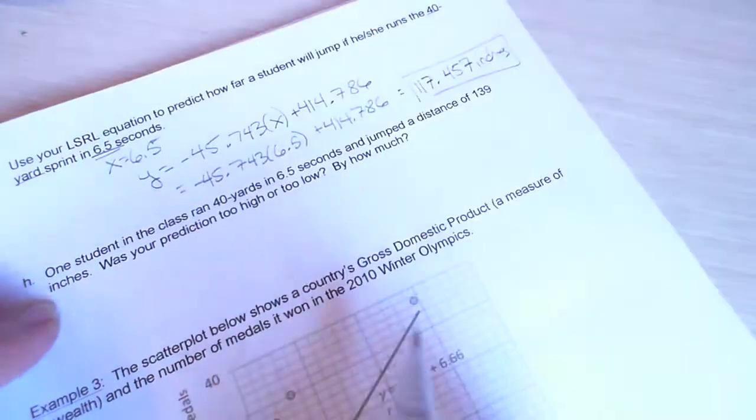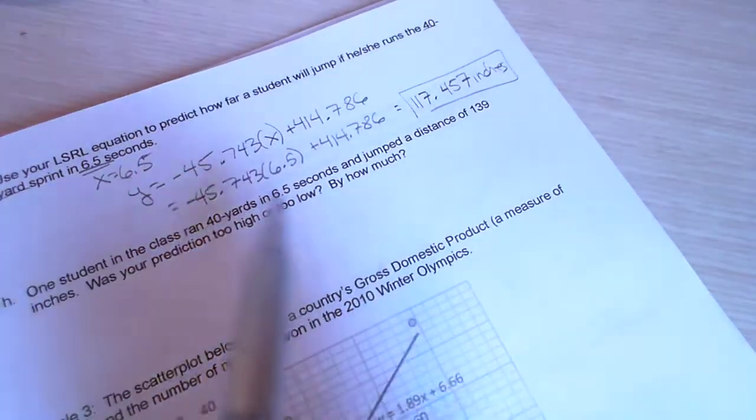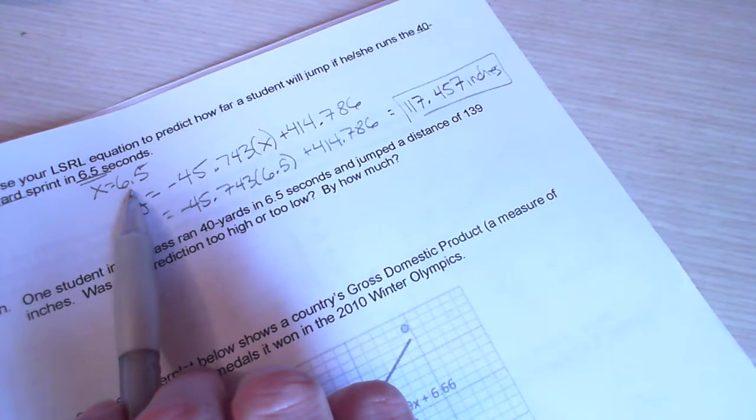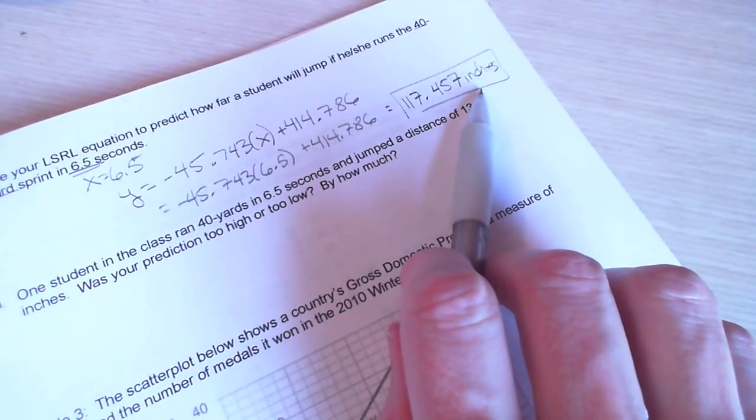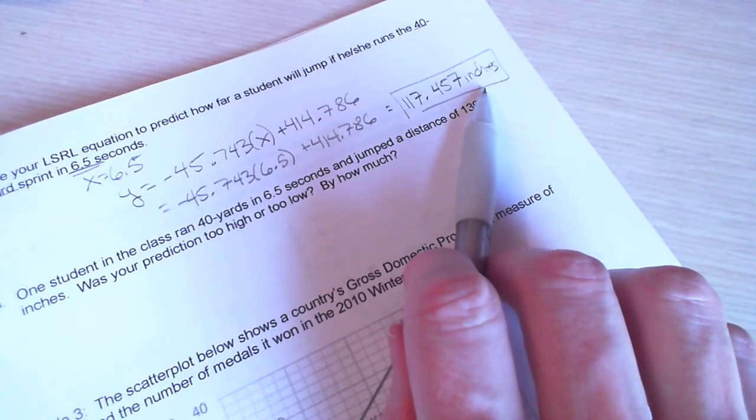And what I get is 117.457 inches. So, this is how far we predict they would jump if they're able to sprint in 6.5 seconds. Make sure you put units on all of these answers. The output is in inches.